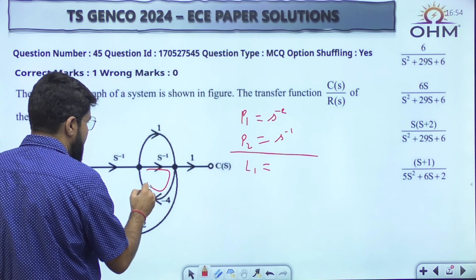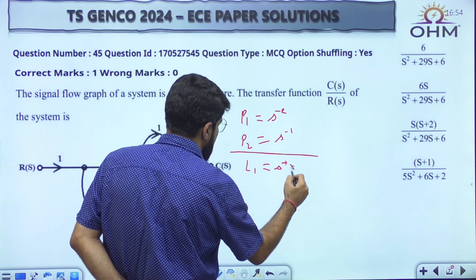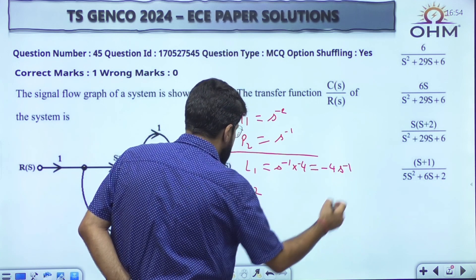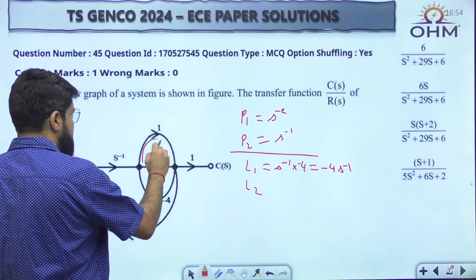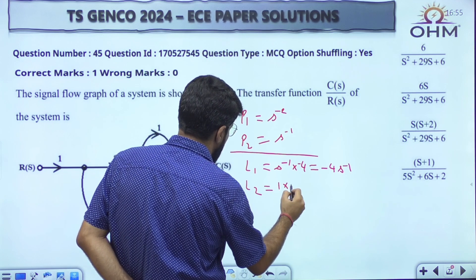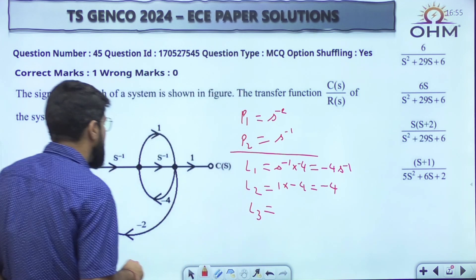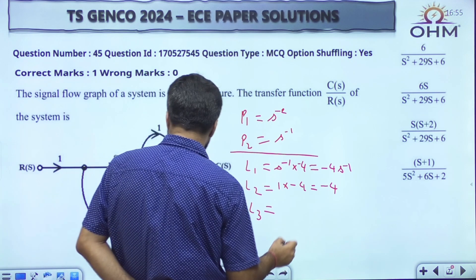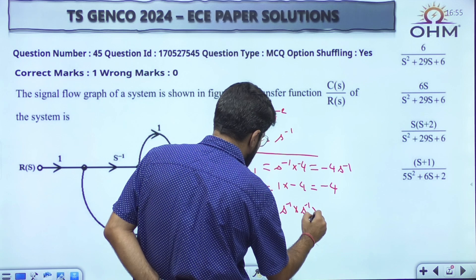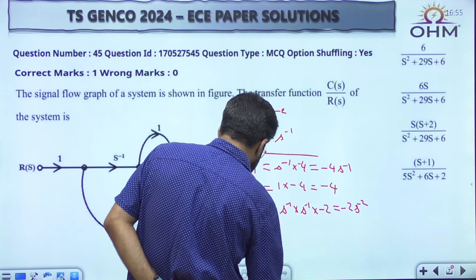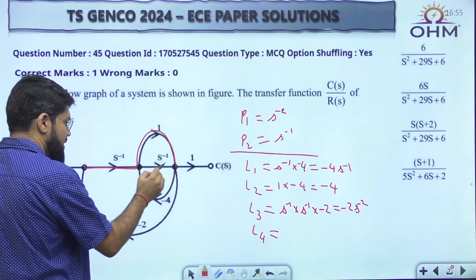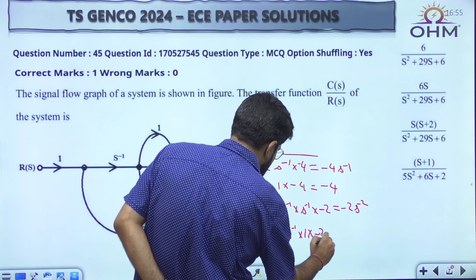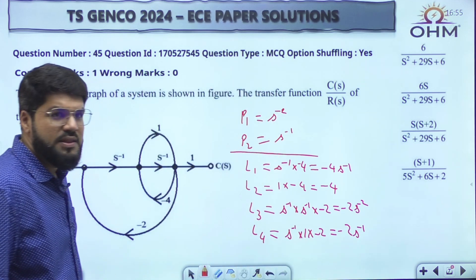How many loops are there? Loop L1: S power minus 1 into minus 4, giving minus 4S inverse. Loop L2: 1 times minus 4 using the top branch, giving minus 4. Loop L3: S inverse times S inverse with minus 2, giving minus 2S power minus 2 — the bigger loop. Loop L4: using the top branch — S inverse times 1 times minus 2, giving minus 2S inverse. These are the 4 loops.